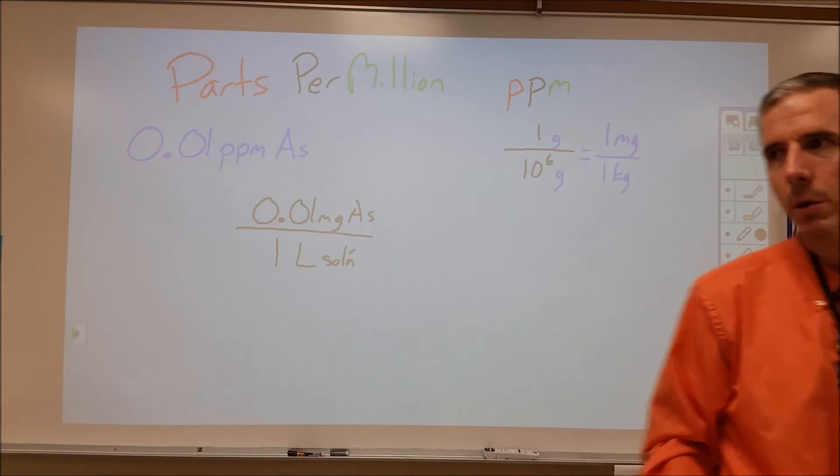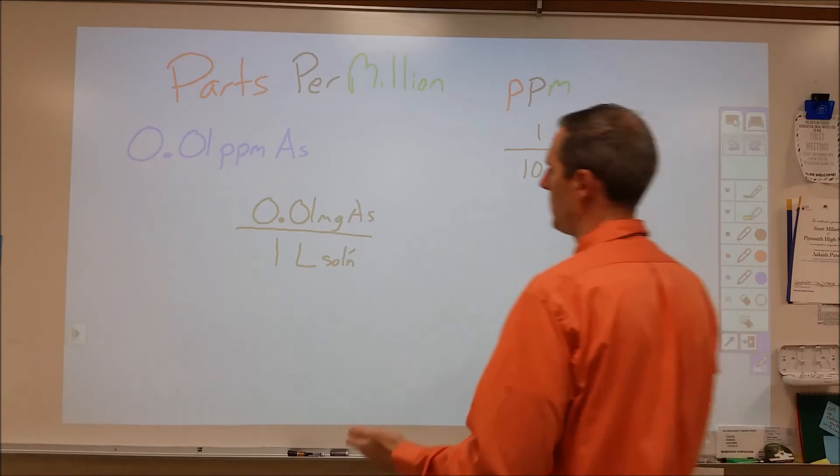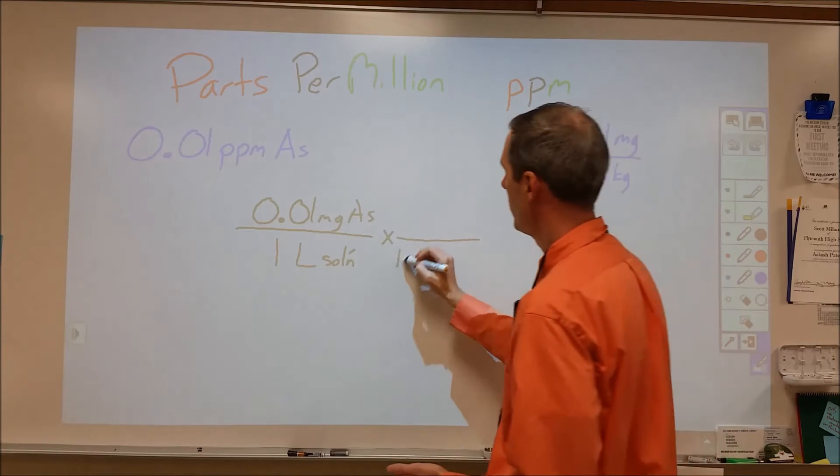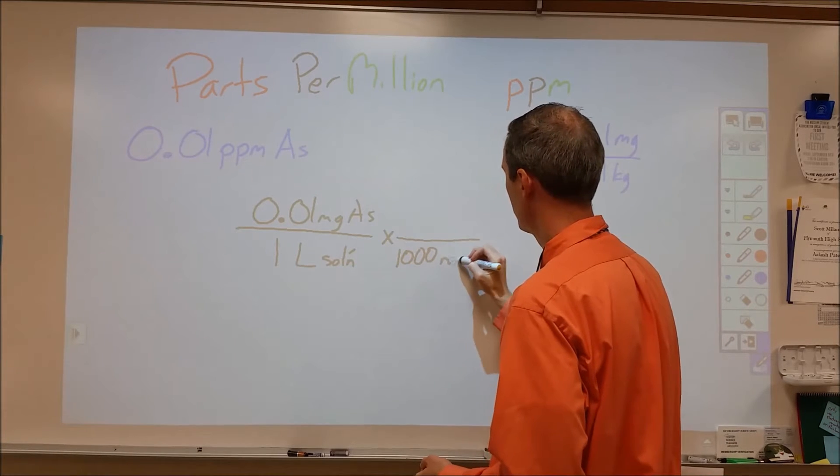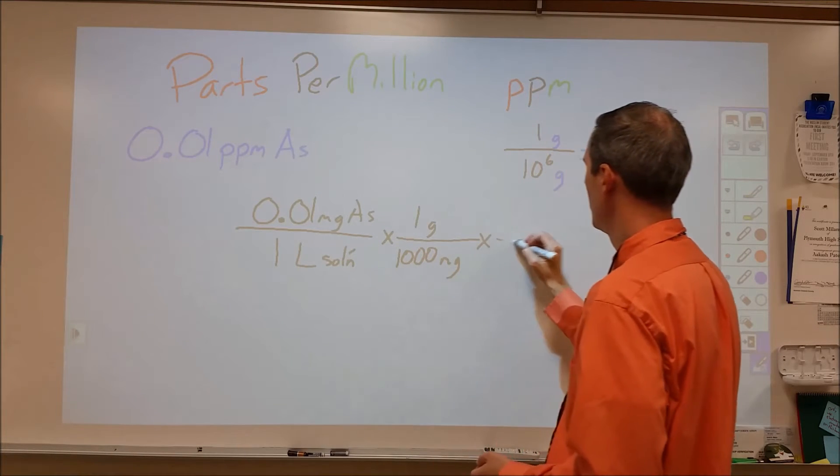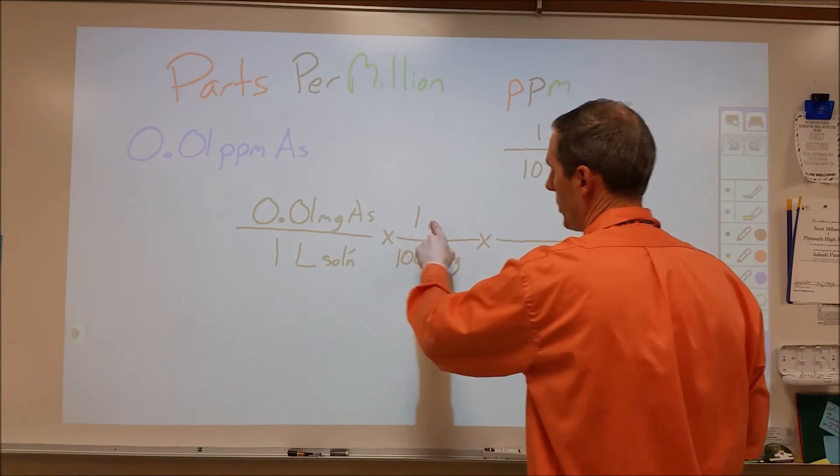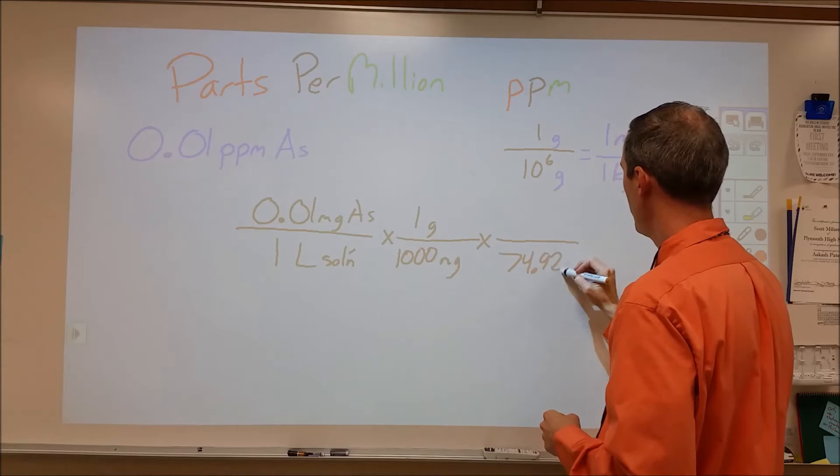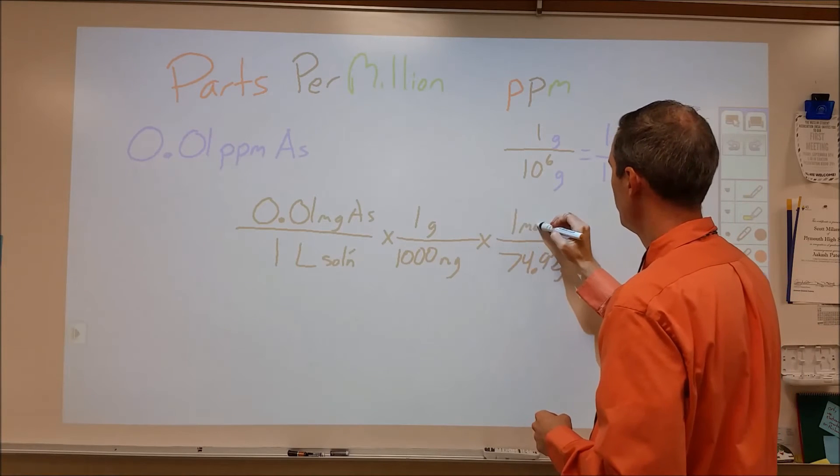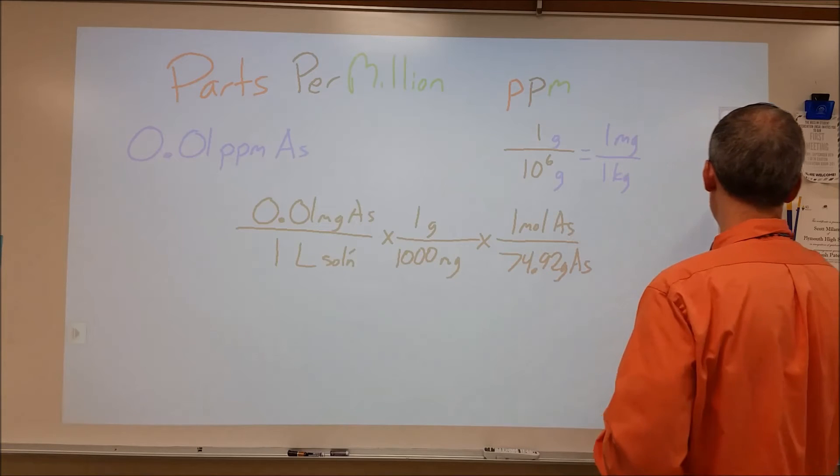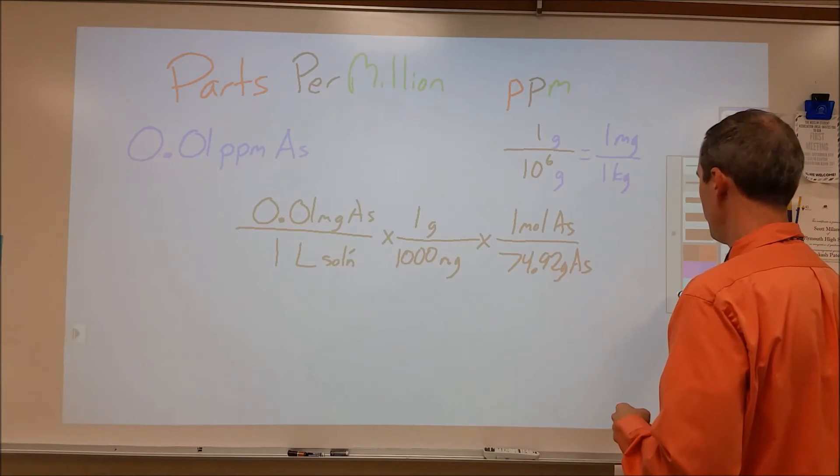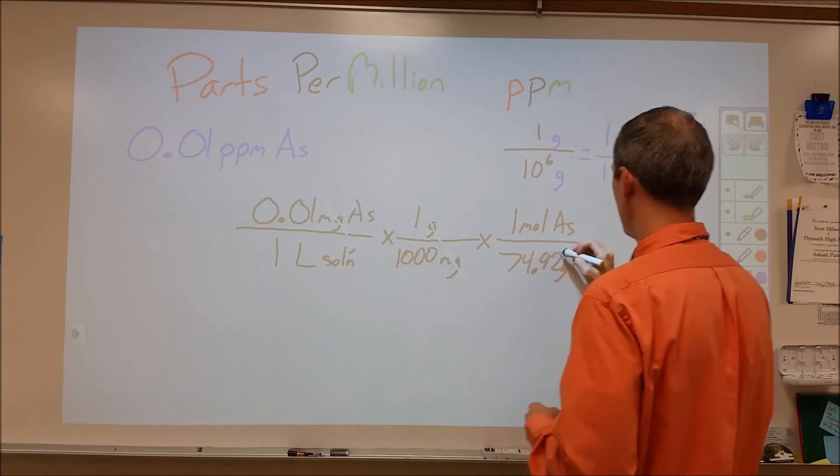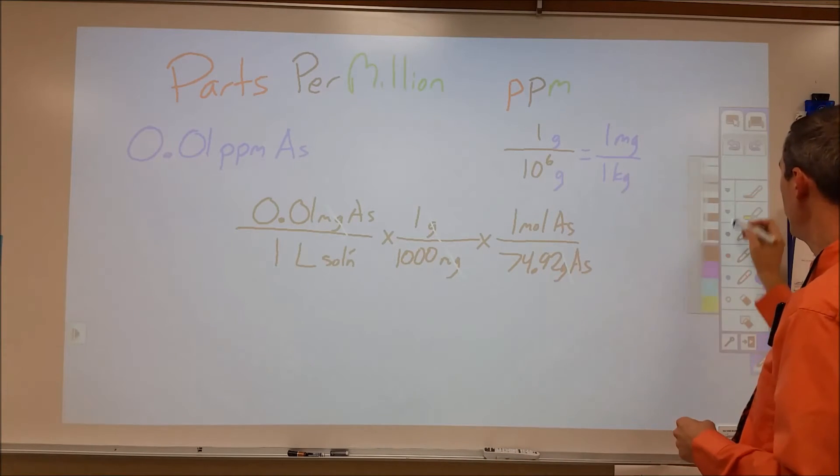From there we can put that into a more common unit. Instead of milligrams per liter, we can look at that in terms of molarity by doing a couple simple conversions. First, we want to change milligrams into grams, and then second we want to change grams into moles. So 74.92 grams of arsenic is equivalent to one mole. I've changed from milligrams to grams and grams to moles, so I've created a molarity unit.